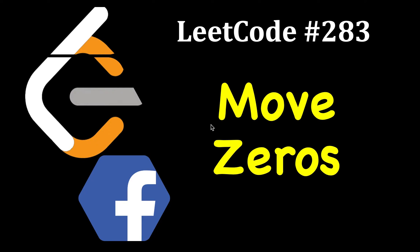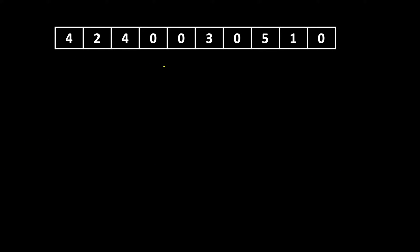In this video we are going to solve LeetCode problem number 283, called Move Zeros. The problem statement is very simple — it's one of the easier problems asked at Facebook. You are given an array with some zeros and some non-zero numbers. Your task is to move all the zeros to the end, so first all the non-zero elements should come, then all the zeros. One constraint is that the relative ordering of the non-zero elements should not be changed.